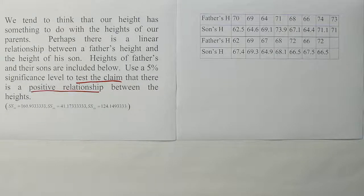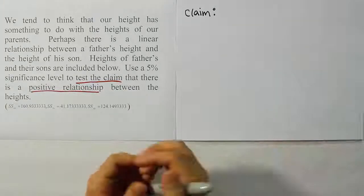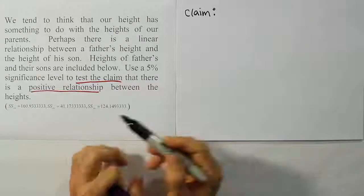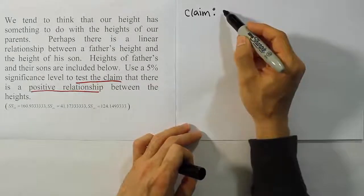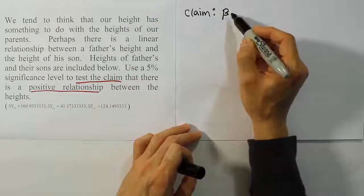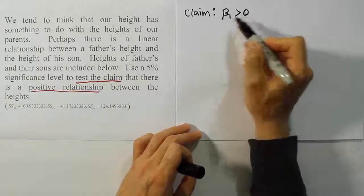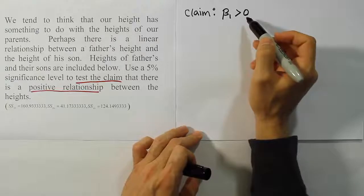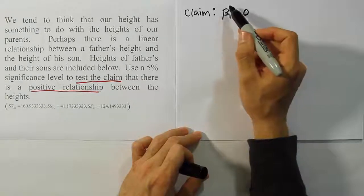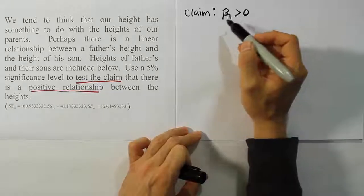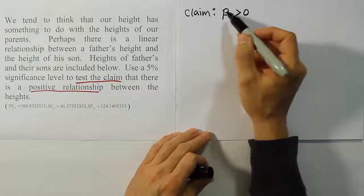Alright, so for this problem, the claim is about the slope, essentially, of the regression equation. Because to say that there is a positive relationship is to say that the slope for the regression line is positive. So we're going to say that β1 is greater than 0, which is another way to say it's positive. Notice it's just β1, not β1 hat. β1 is the population parameter, whereas β1 hat is the sample point estimator for β1.